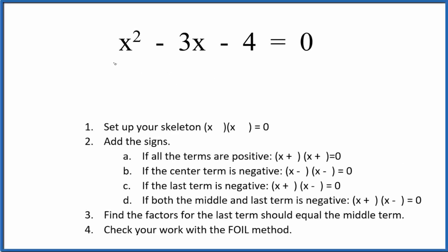Let's take a look at how to factor the equation x squared minus 3x minus 4 equals 0. And we use these guidelines here to help us.